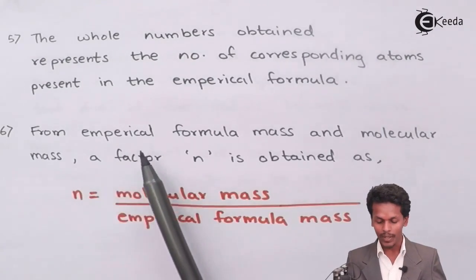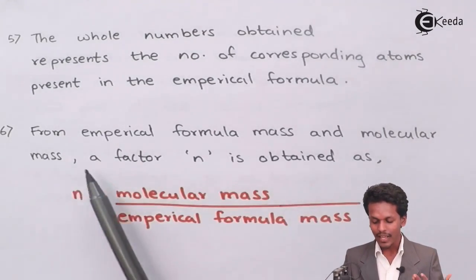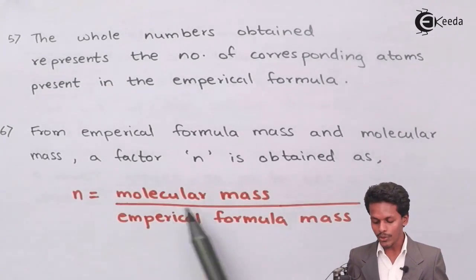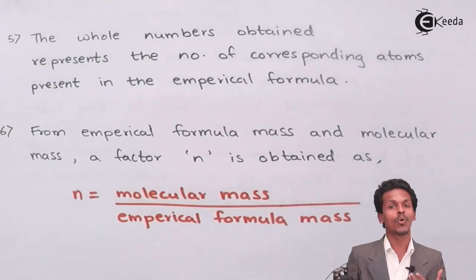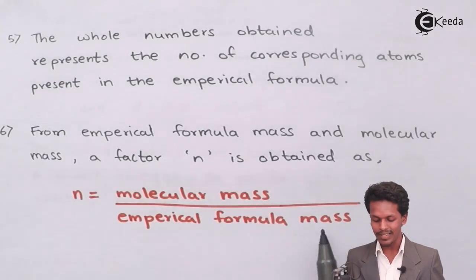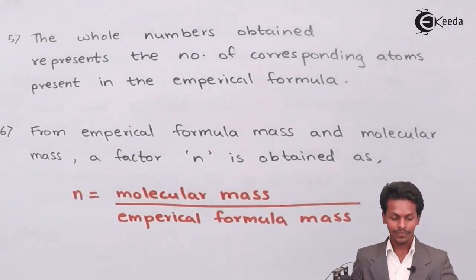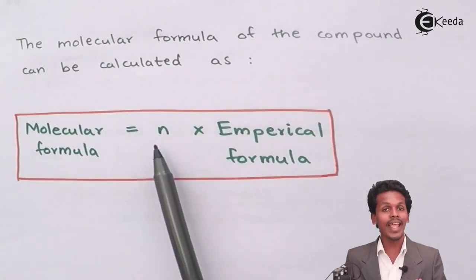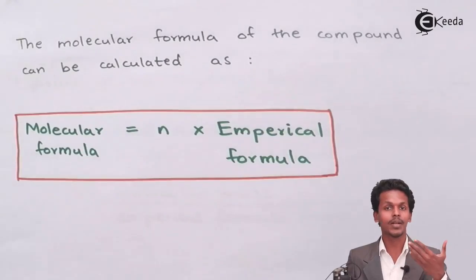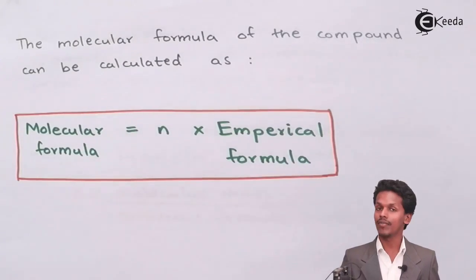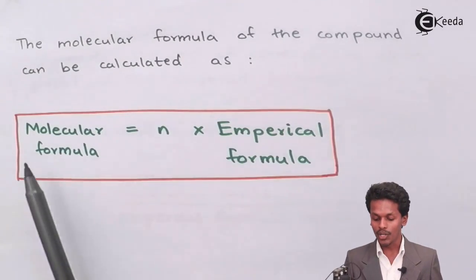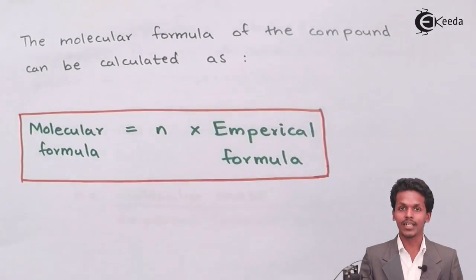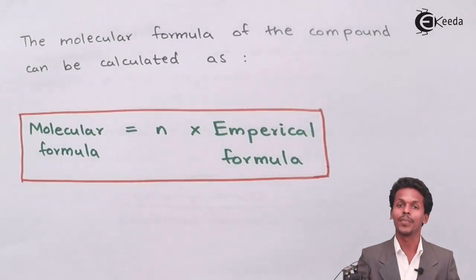Step 6: From the empirical formula mass and the molecular mass, a factor n can be obtained, where n = molecular mass ÷ empirical formula mass. The molecular formula is then calculated as: molecular formula = n × empirical formula. This gives us the key relationship between molecular formula and empirical formula.